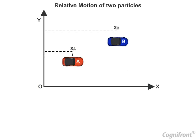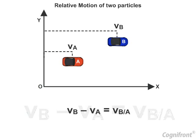The rate of change of distance is velocity. Hence, by differentiating the equation, we get the relative velocity of B with respect to A and it is denoted like this.